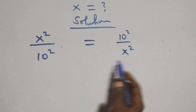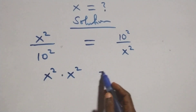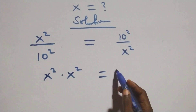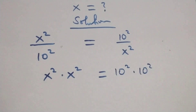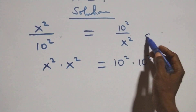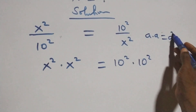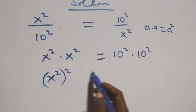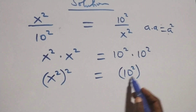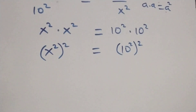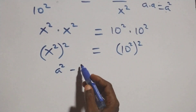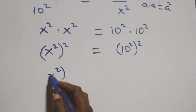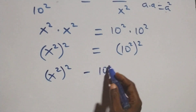we cross-multiply: x squared times x squared equals 10 squared times 10 squared. When we have the same thing multiplying, a times a, we write that as a squared. So we have x to the fourth equals 10 to the fourth. Taking the right-hand side to the left-hand side, we get x to the fourth minus 10 to the fourth equals zero.